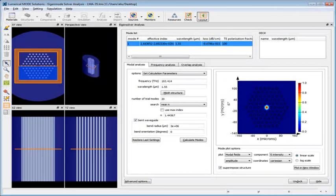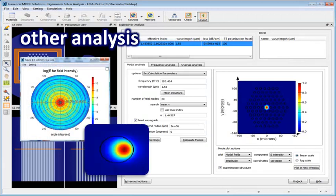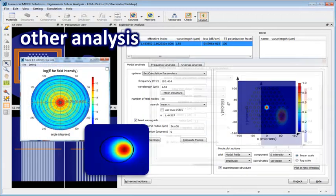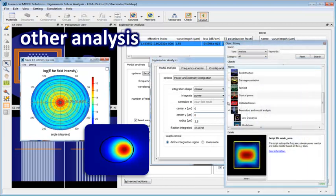Other types of analyses include near to far field transformations, bent waveguide calculations, modal confinement factors, as well as effective modal area, and other advanced analyses.